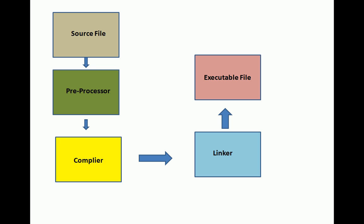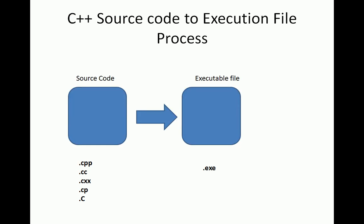A source file can have the extension .cpp, .cc, .cxx, .cp, or capital .C. We differentiate that a file is a C++ file by its extension — if the file has a .cpp extension, we can say that it is a C++ file.